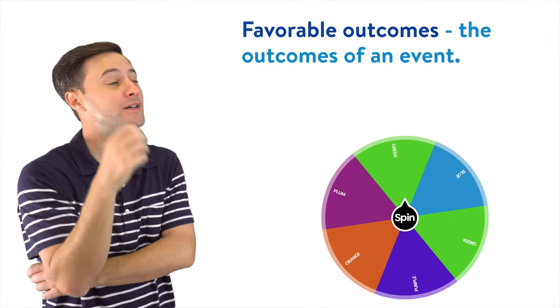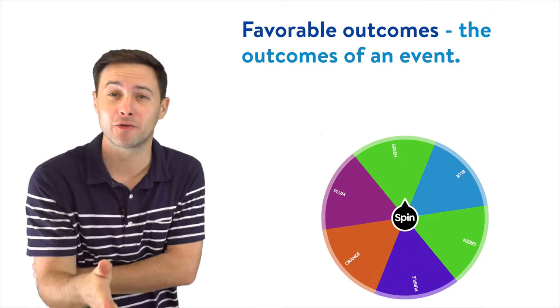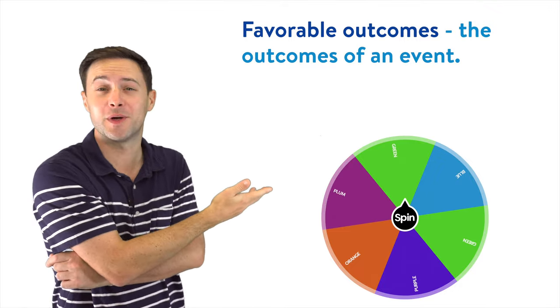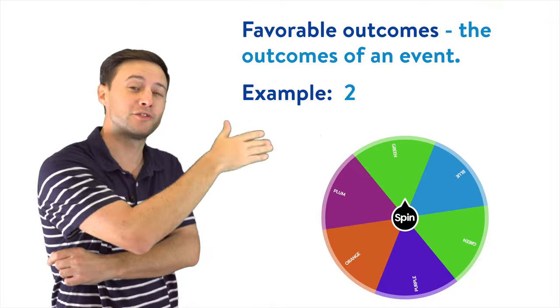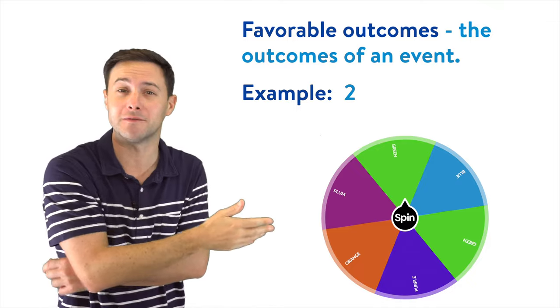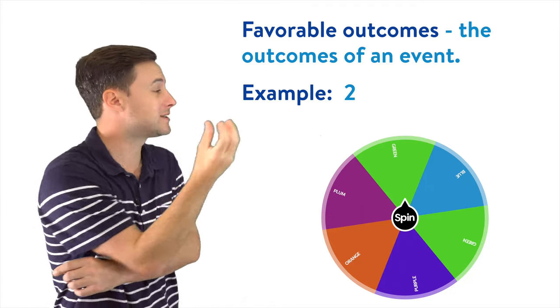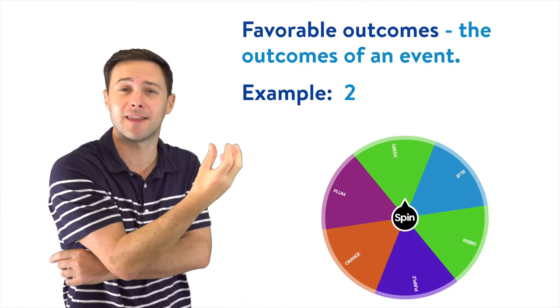And then finally, the outcomes of that specific event we would call favorable outcomes. So if the event is to land on green, how many favorable outcomes are there? Well, in this situation, there's two, because there are two ways to land on green, which is what we wanted. So the favorable outcomes is what you want to happen. How many ways can that thing happen?